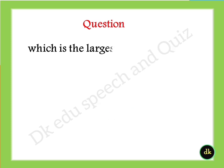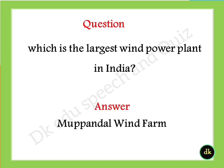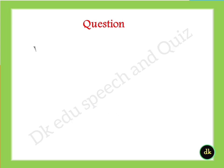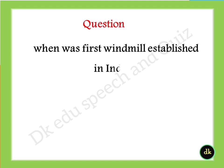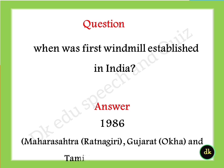Which is the largest wind power plant in India? Answer: Mupandal Wind Farm, located in Kanyakumari district, Tamil Nadu. When was the first windmill established in India? Answer: 1986, at Maharashtra, Ratnagiri, Gujarat, and Tamil Nadu.